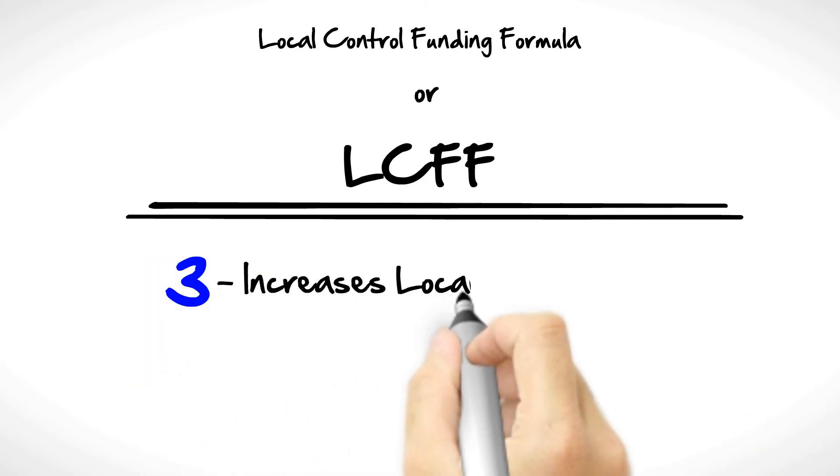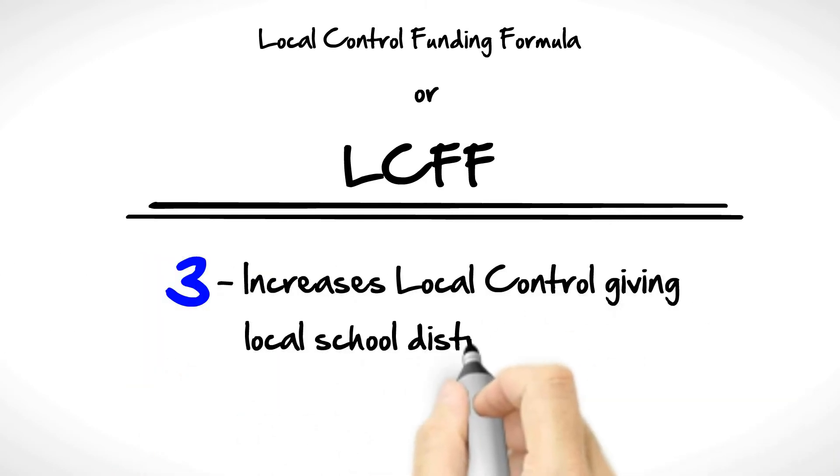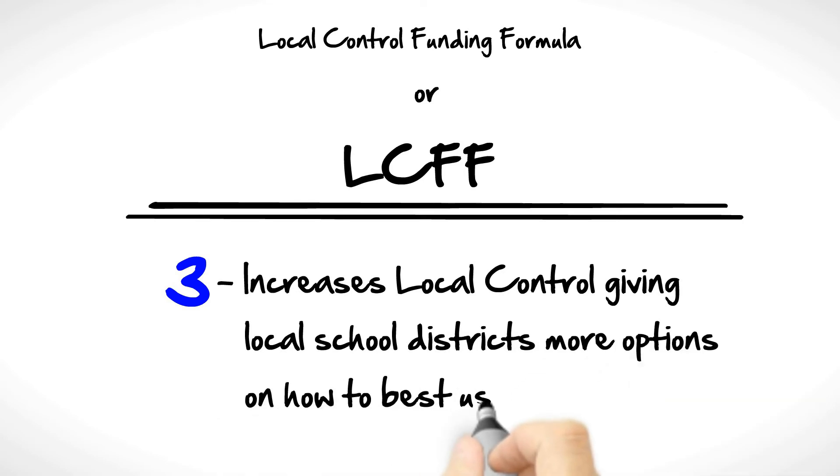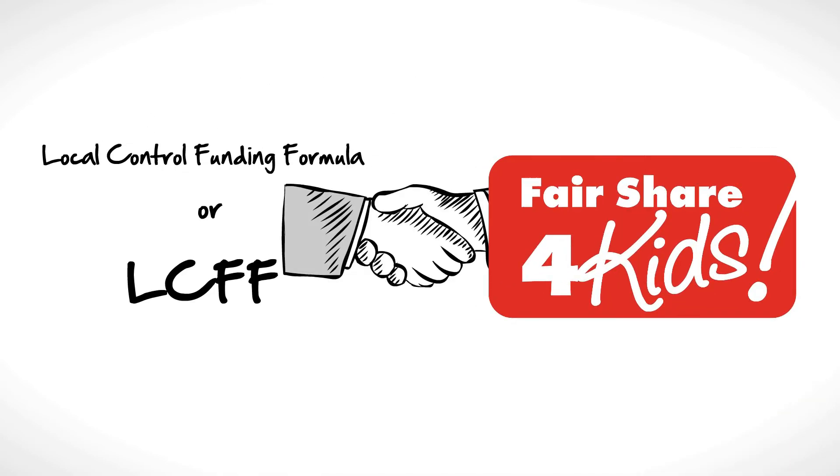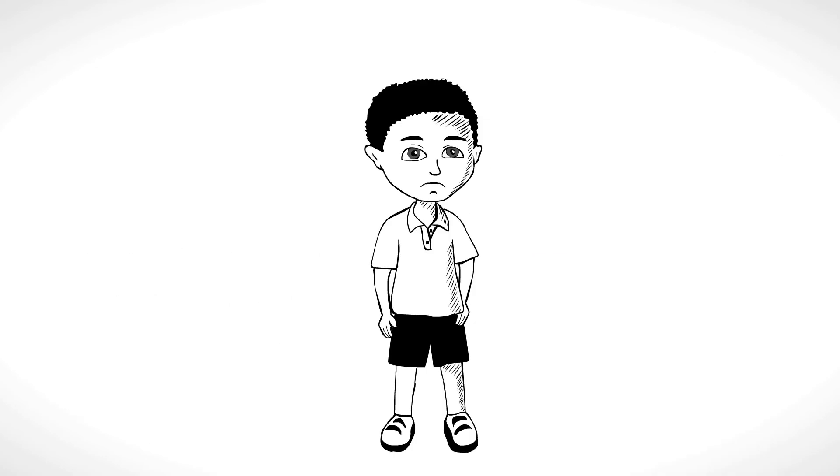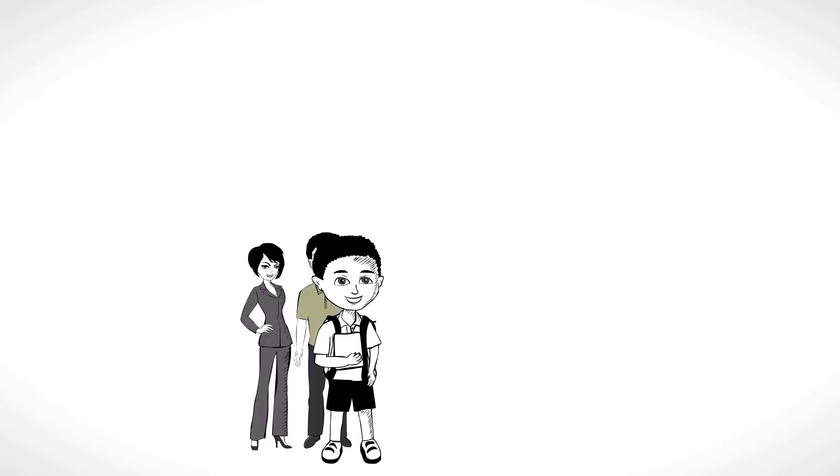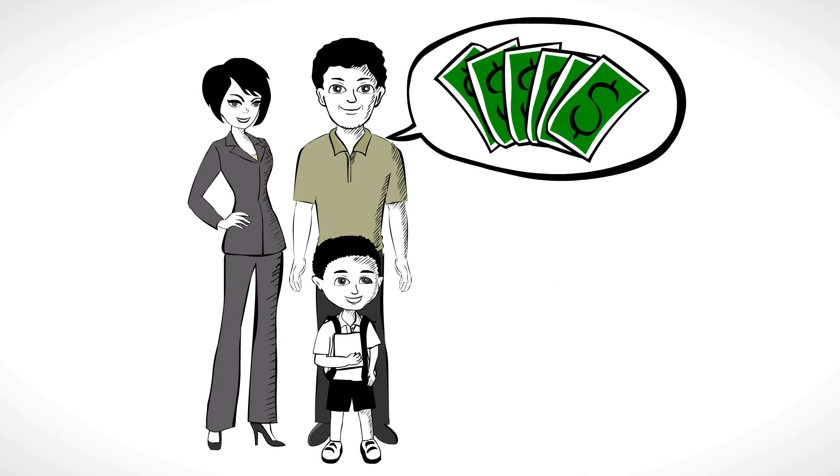Three: Increases local control, giving local school districts more options on how to best use funds. Fair Share for Kids supports this plan so long as low-income students receive the support they need and parents have a voice on how monies are spent.